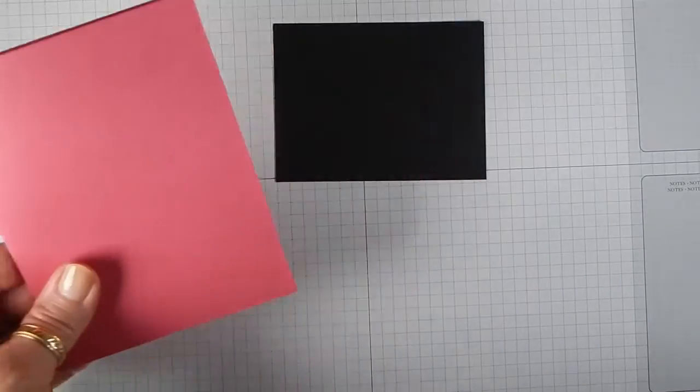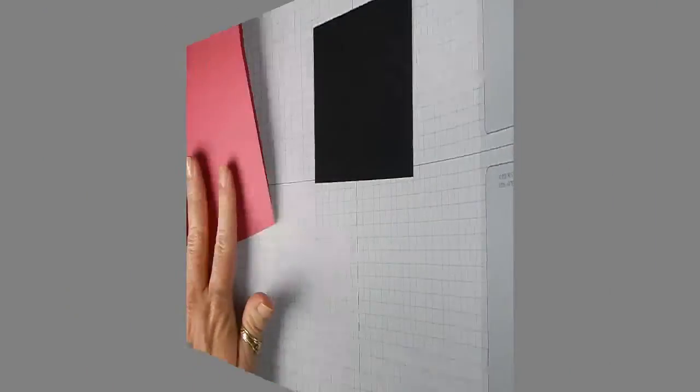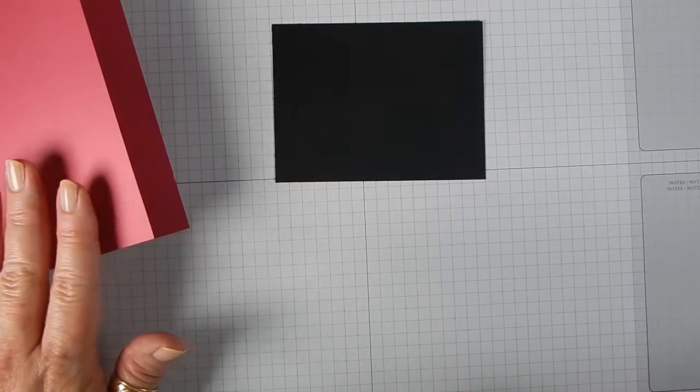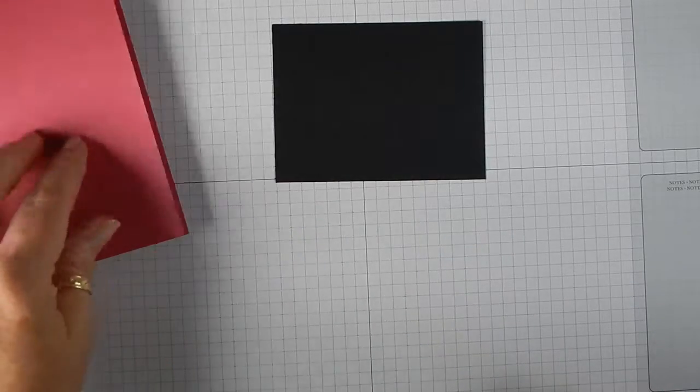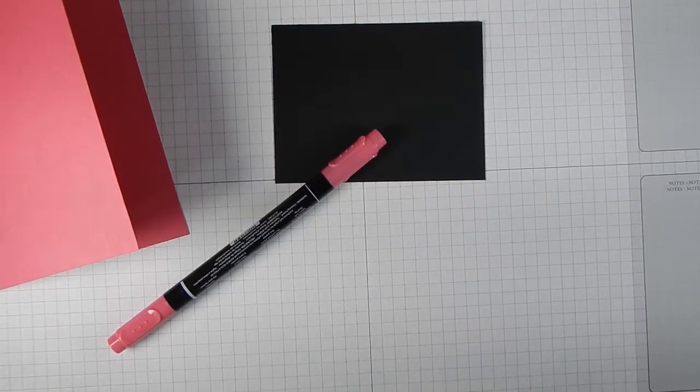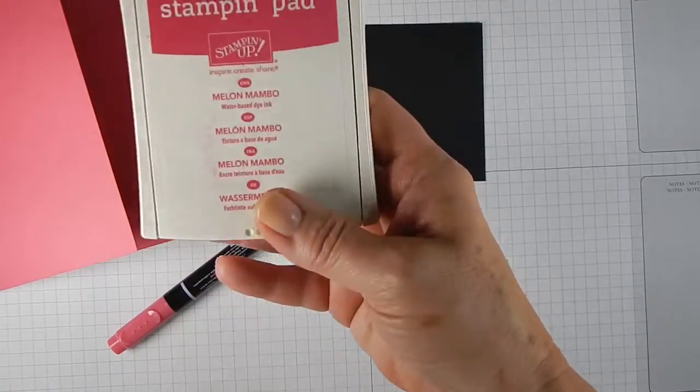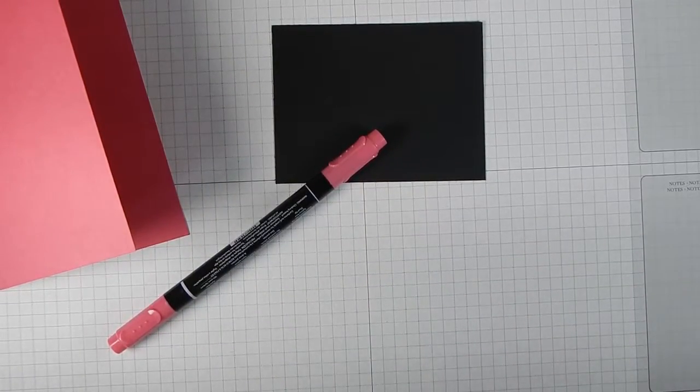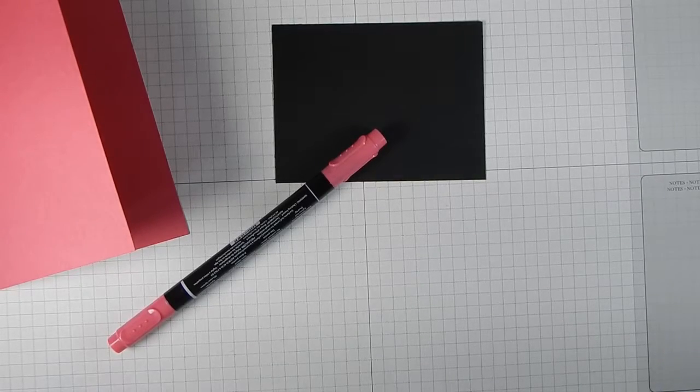This is called Melon Mambo. One nice thing about Stampin' Up is they come up with these really cool names. We have coordinating items that go with each color that we have. Like Melon Mambo cardstock, we have a Melon Mambo Stampin' Write marker, we have Melon Mambo ink. So anything that you purchase, you know that they're going to be able to coordinate all your items for you.